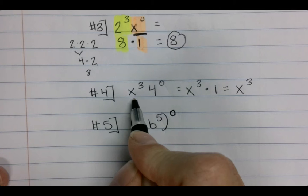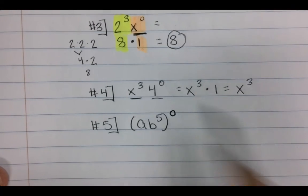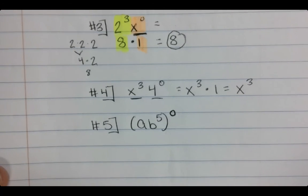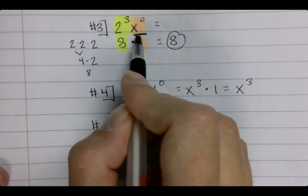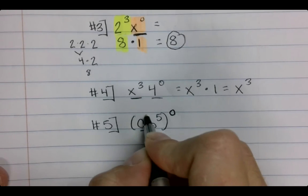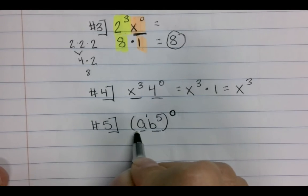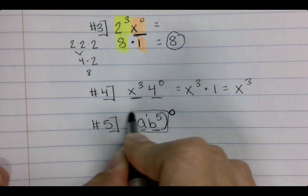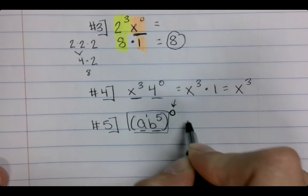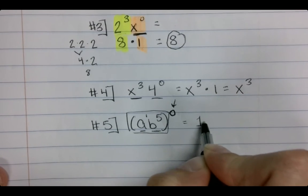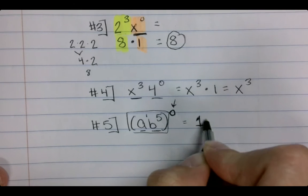So if you notice, each of these have their own power. This has a power of one, which we're going to talk about here in a second. This has a power of five, but the whole thing is raised to a power of zero. So this still equals one.